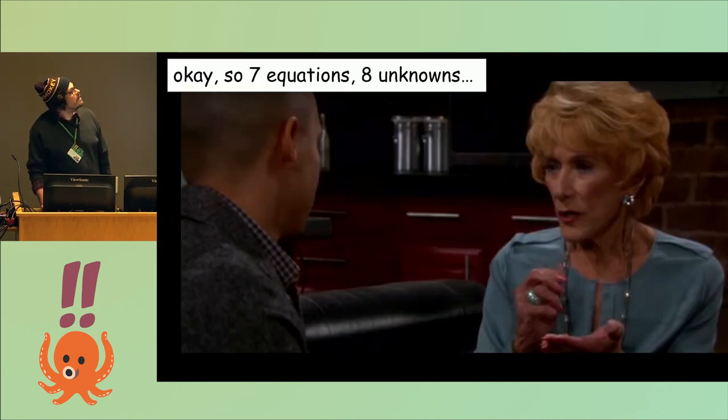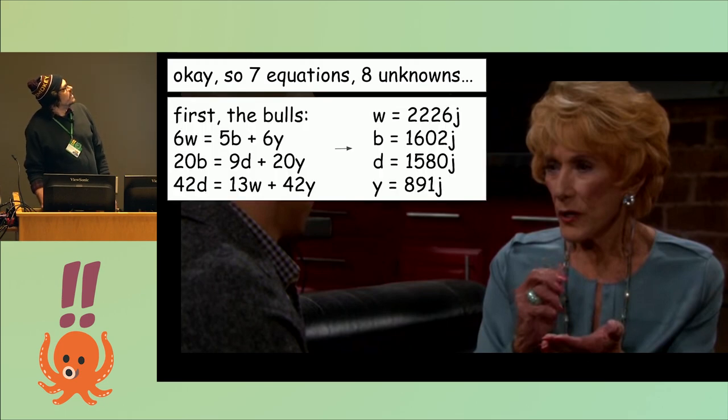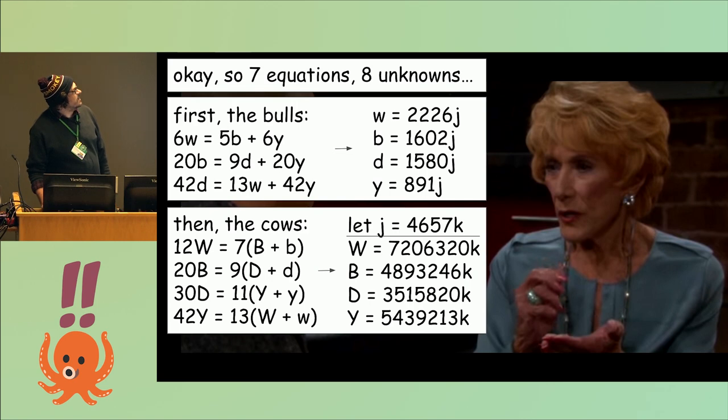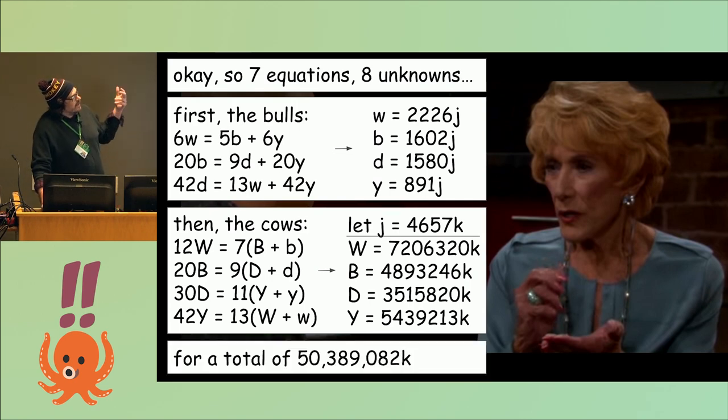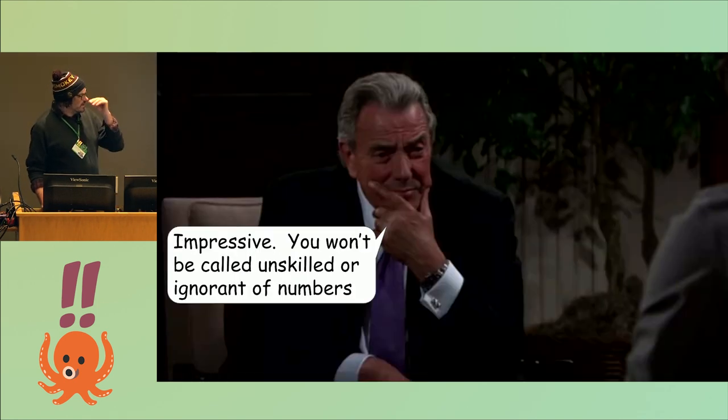So Catherine gets to work. Infinitely many solutions, because we got one free parameter. She does some stuff, and then she does some more stuff. She's like, hey, the smallest number of cattle under the sun is 50 million, and you could take any multiple of this number and it would also work.